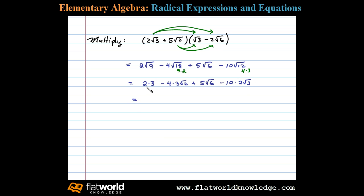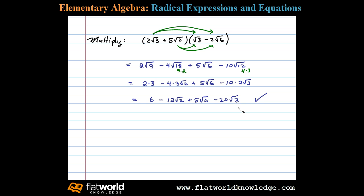Simplifying further, we have six minus twelve square root of two plus five square root of six, minus twenty square root of three. Now at this point I notice there are no like radicals, and therefore this expression is completely simplified.